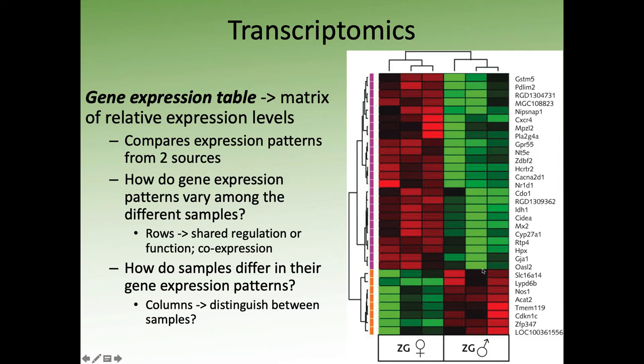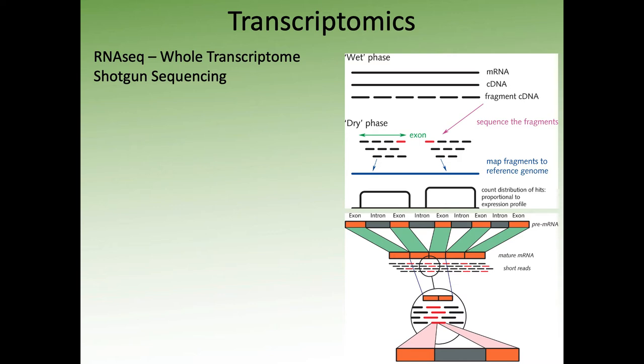RNA-seq is probably the most commonly used method for transcriptomics — it's basically whole transcriptome shotgun sequencing. The goal is to quantify what RNA is present in the sample. One of the big benefits of this method is that it's hypothesis-free: whatever you're sequencing is what you get, you don't need to know ahead of time what genes to put on a chip. You can just take your samples and sequence them and may see differences you didn't expect, so there's a certain amount of discovery science involved that you might not get with other approaches.